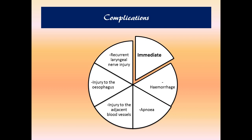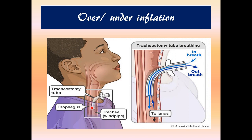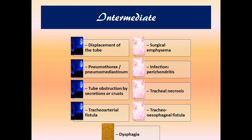Complications of tracheostomy can be immediate, intermediate, or long-term. Immediate complications include bleeding, apnea, injury to adjacent blood vessels, esophageal injury, and laryngeal nerve injury. Over-inflation of the cuff can cause excessive pressure on the tracheal wall causing spasms, while under-inflation can lead to dislodgement of the tube.